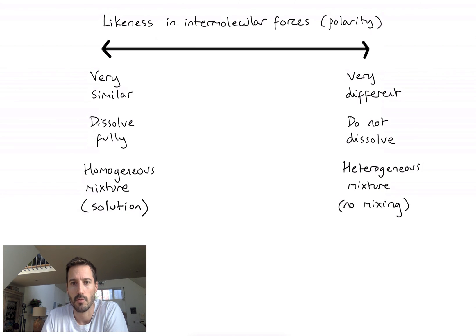Now somewhere in the middle I can have things that are a little bit similar but not fully similar. What's going to happen to them? Well, they're going to dissolve a little bit but I might also see a layer forming as well. And that's pretty much it for the general solubility rule. Hopefully this video was of some help.